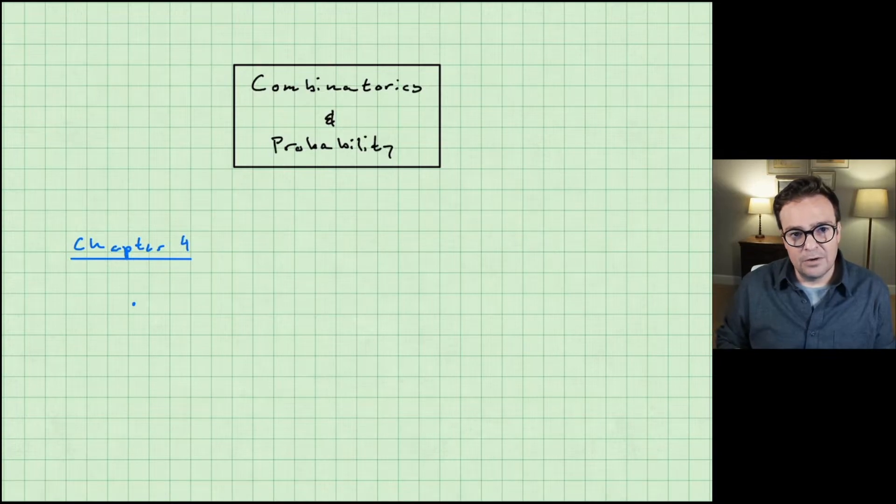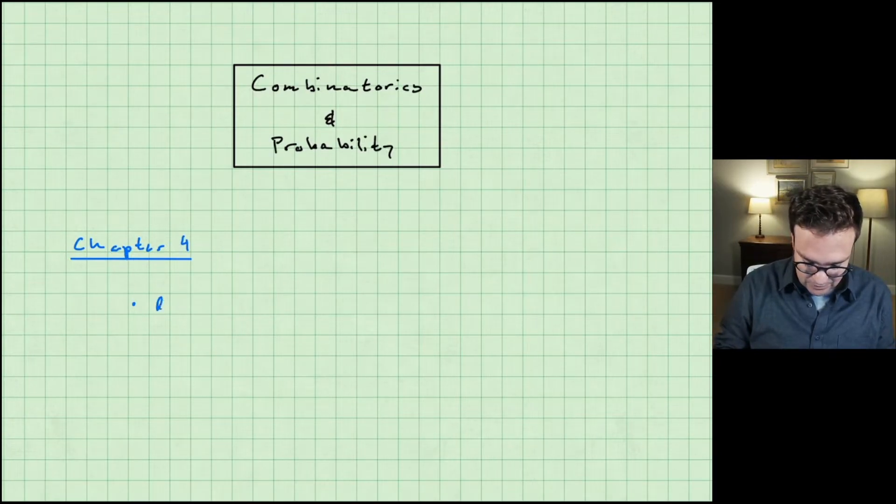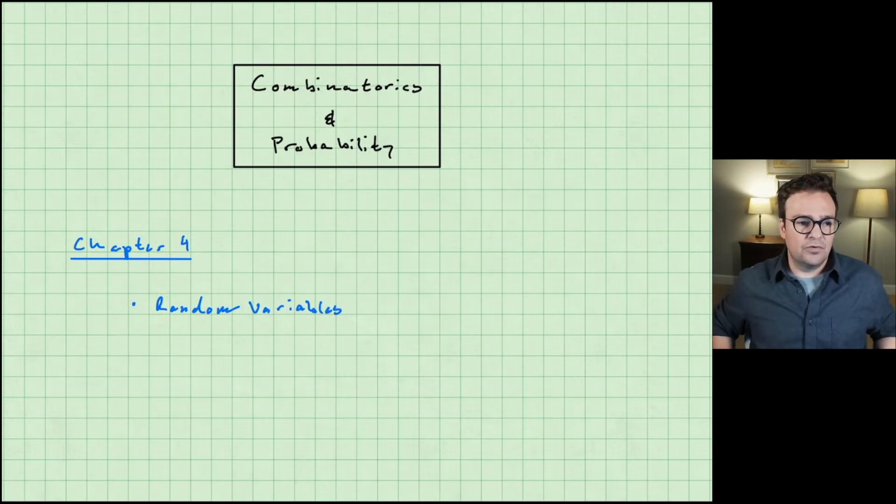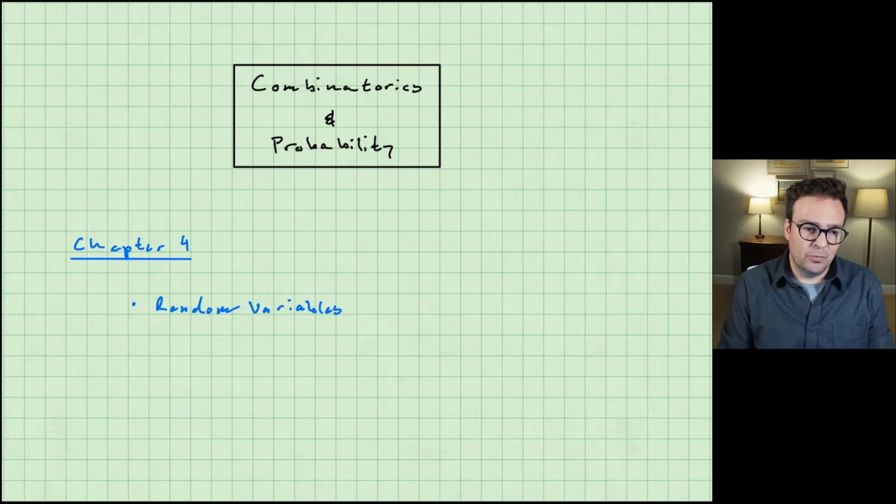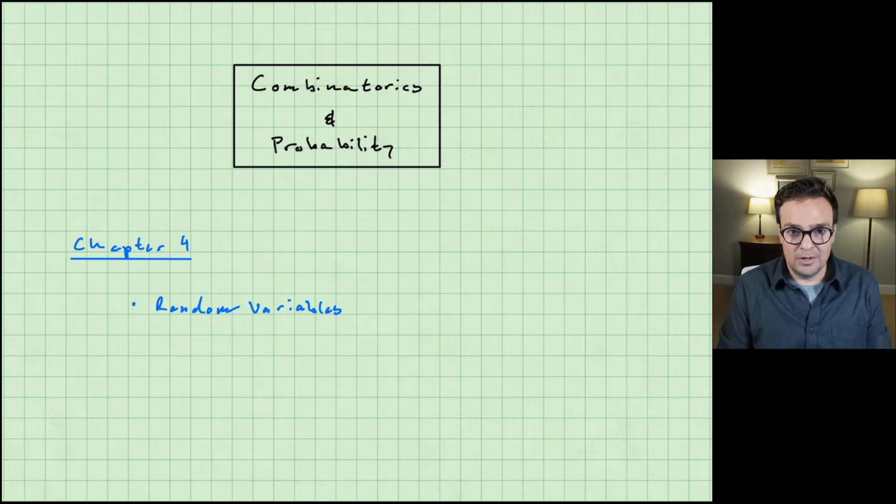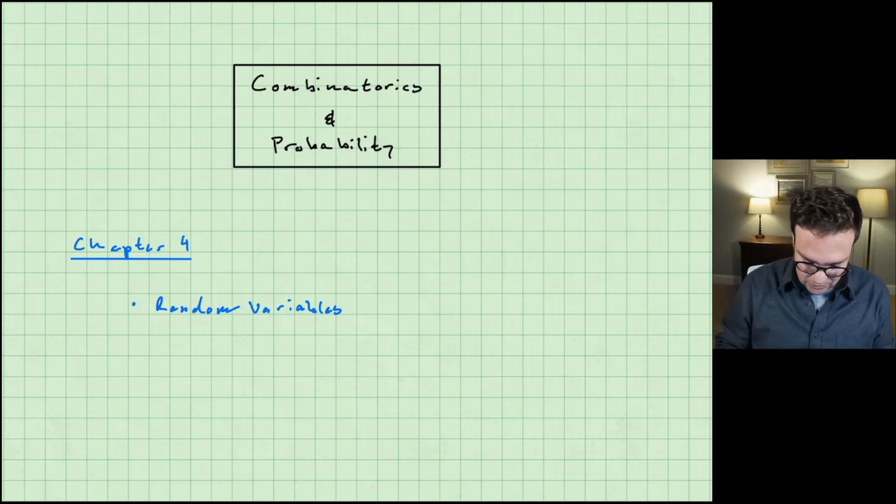In chapter 4 we're going to spend most of the time talking about random variables. We're going to introduce the most famous or most heavily used distributions for random variables both for discrete and continuous. So we're going to talk about both of those individually.